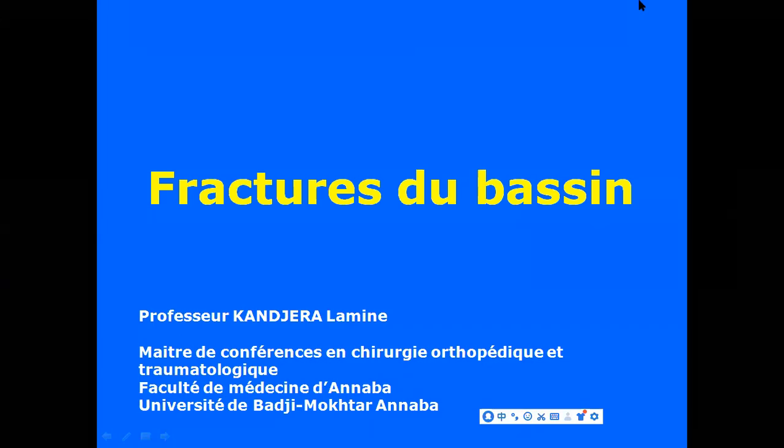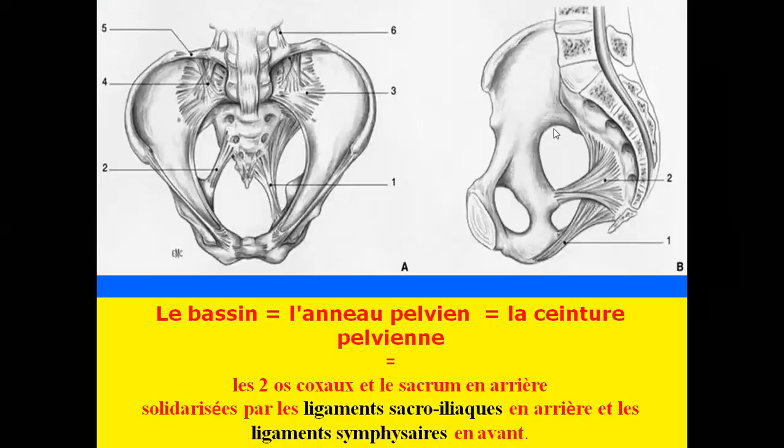On débute les deux cours : les fractures du bassin et les fractures du cotyle. Concernant les fractures du bassin, le bassin est appelé aussi l'anneau pelvien ou la ceinture pelvienne. Il est composé de deux os : les deux os coxaux, reliés en arrière au sacrum. Ce qui relie ces os, c'est un ensemble de ligaments sacro-iliaques en arrière et des ligaments symphysaires en avant.